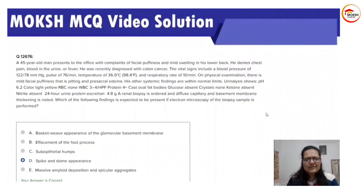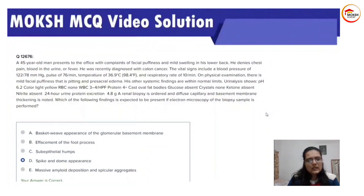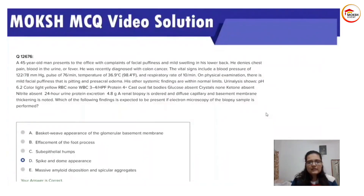pH is relatively acidic at 5.5, which is considered normal — up to 5.5 is not considered pathologically acidic urine. The color is light yellow, also normal. There are no RBCs, three to four WBCs which is still considered normalish, but there is 4+ protein — so there is proteinuria.